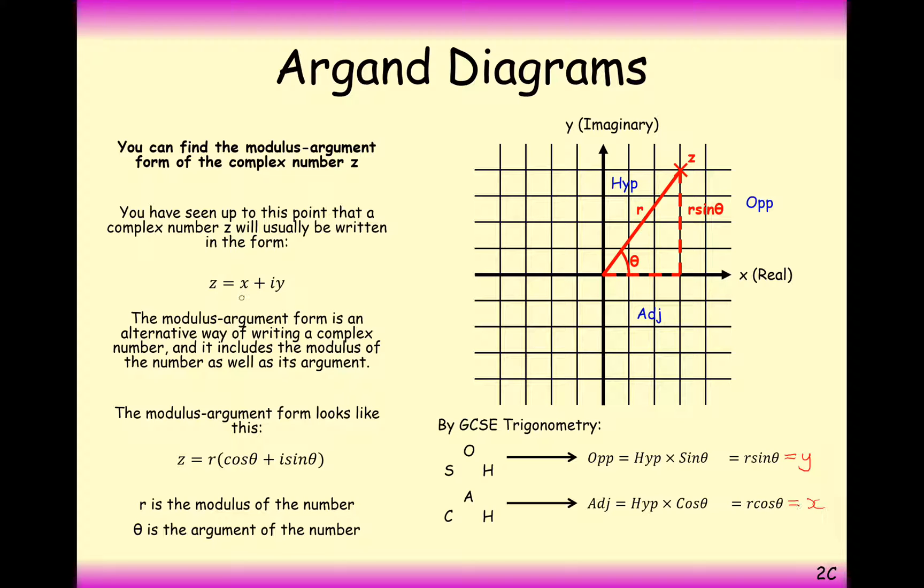Given that any complex number can be written as x, or r cos theta, plus yi, or r sine theta i, we can write out that the complex number z can also be equal to r cos theta, cos theta, because x and r cos theta are exactly the same thing, plus i r sine theta, or i y, because y is exactly equal to r sine theta.